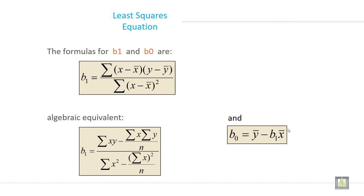The formula for B1 and B0 are: B1 is equal to the sum of (x minus x bar) times (y minus y bar) divided by the sum of (x minus x bar) squared. And you can write it algebraically like this: B1 is equal to the sum of xy minus (sum of x times sum of y divided by n), all divided by the sum of x squared minus (sum of x) squared divided by n.